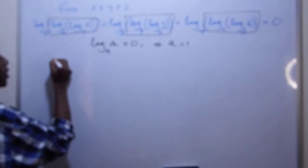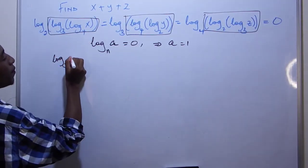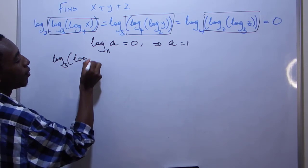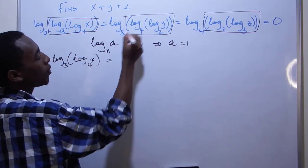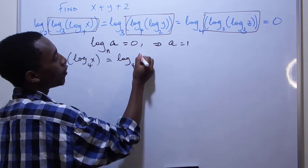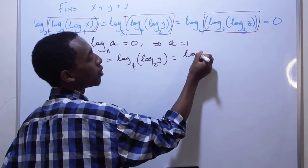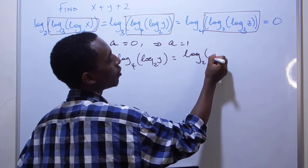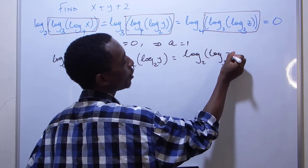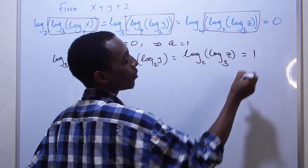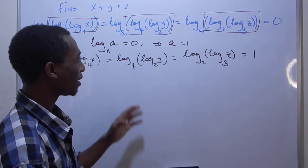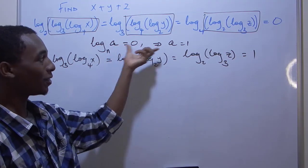So I'll rewrite this as log three of log four x equals log four of log two y, because log two of log three z and all this equals to one because, you know, this condition here.